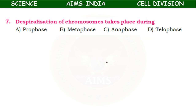Despiralization of chromosomes takes place during — prophase, metaphase, anaphase, or telophase? The answer is prophase. Despiralization takes place during prophase.